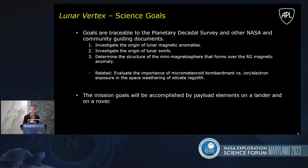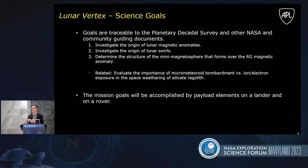These are the Lunar Vertex science goals: investigate the origin of the magnetic anomalies, investigate the origin of lunar swirls, and look into the structure of the magnetic mini magnetosphere above Reiner Gamma. Related to this, in the process of investigating those goals, we're going to learn more about the nature of space weathering on a silicate regolith.